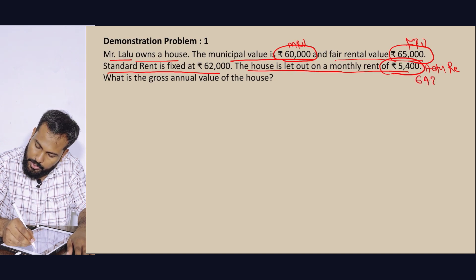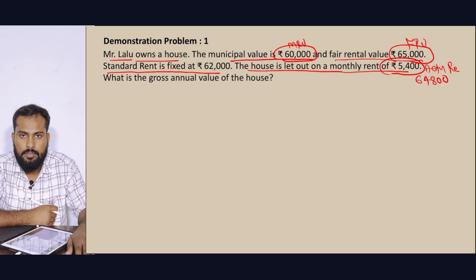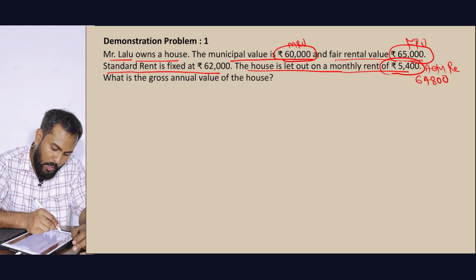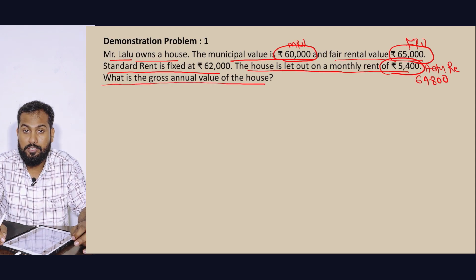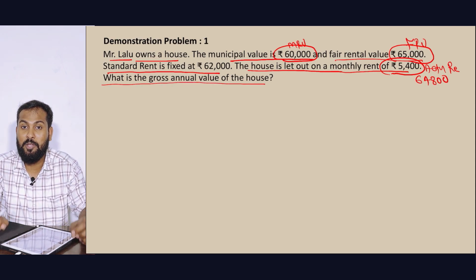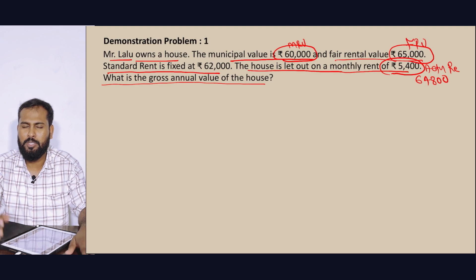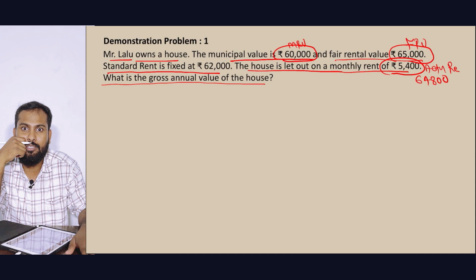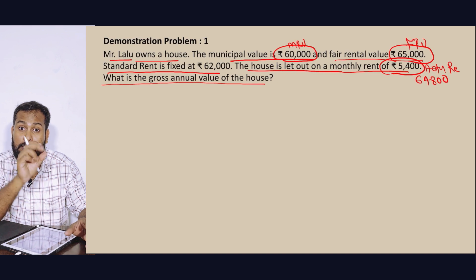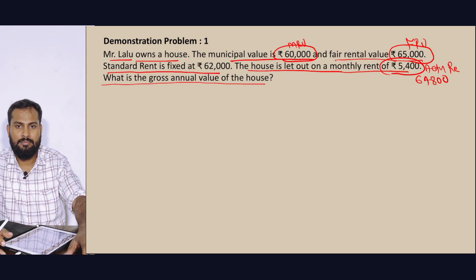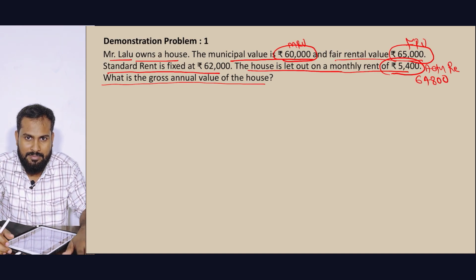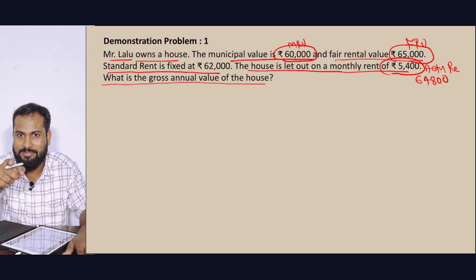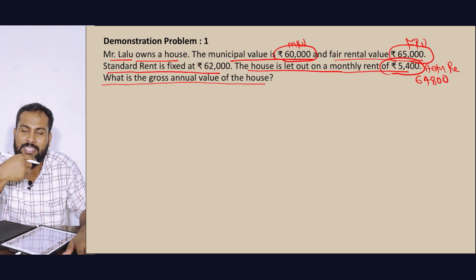There are 64,800. The annual value of the house — the gross annual value of the house. Gross Annual Value. How many people tell you a person? You too — a person who tells you the same person.